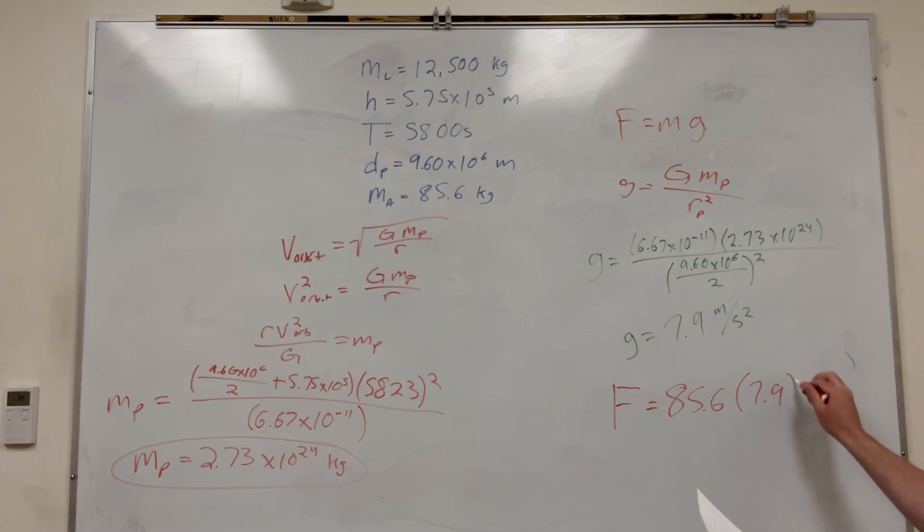Great, so gravity here is a little lighter than it is on Earth. That's a pretty good number. If you get like a million, you're probably like very heavy. It's probably not a good gravity constant. So all that's left is to plug it into our final equation that we started with. So force is equal to the mass of the astronaut which is 85.6, and then multiply that by 7.9. And you're going to get the force of the astronaut is 677 newtons.